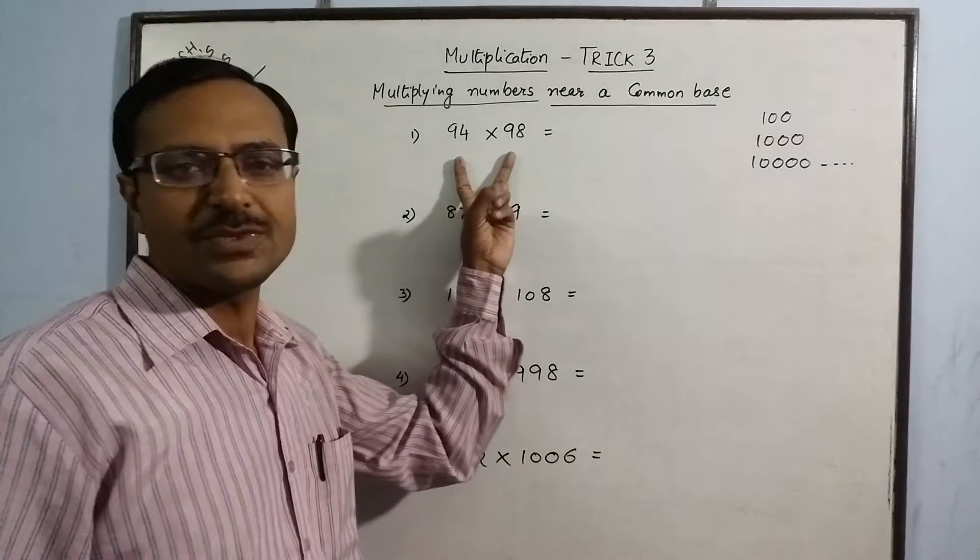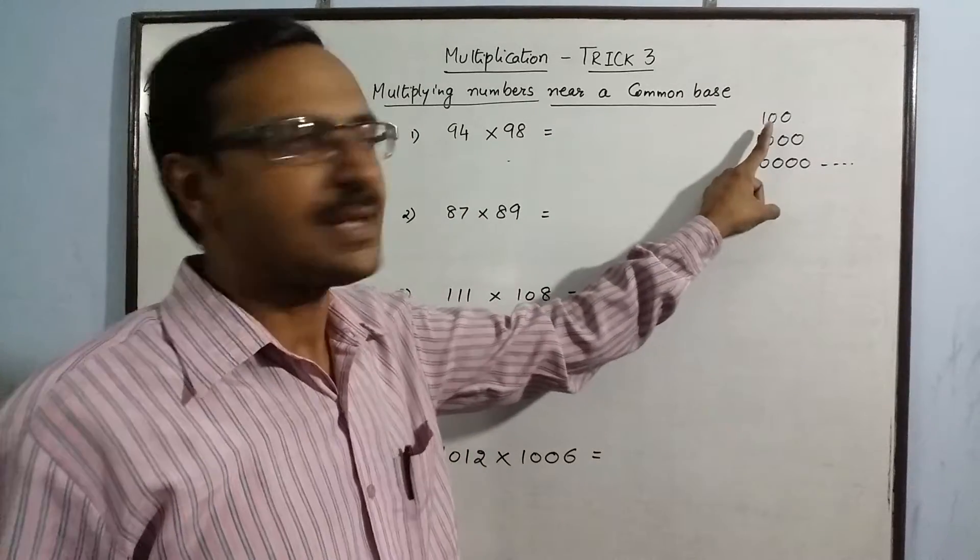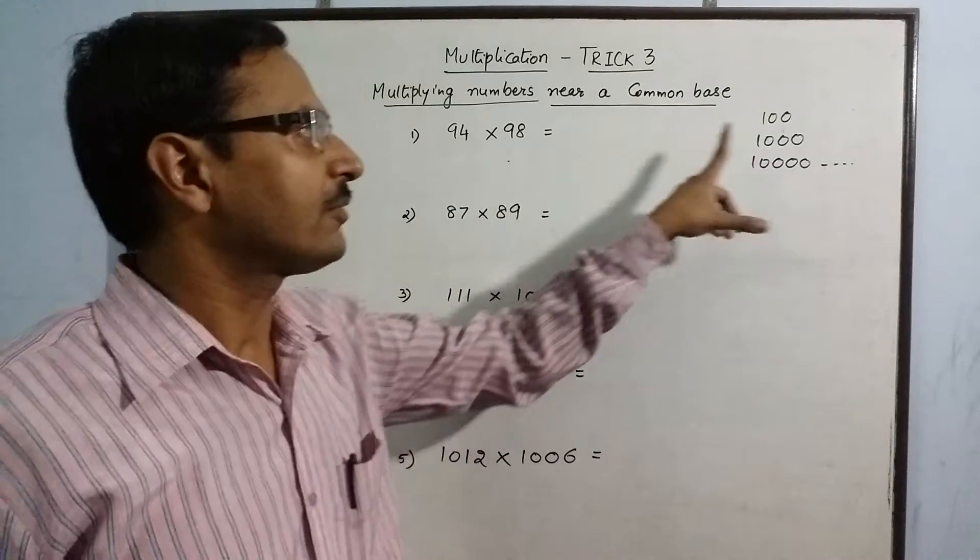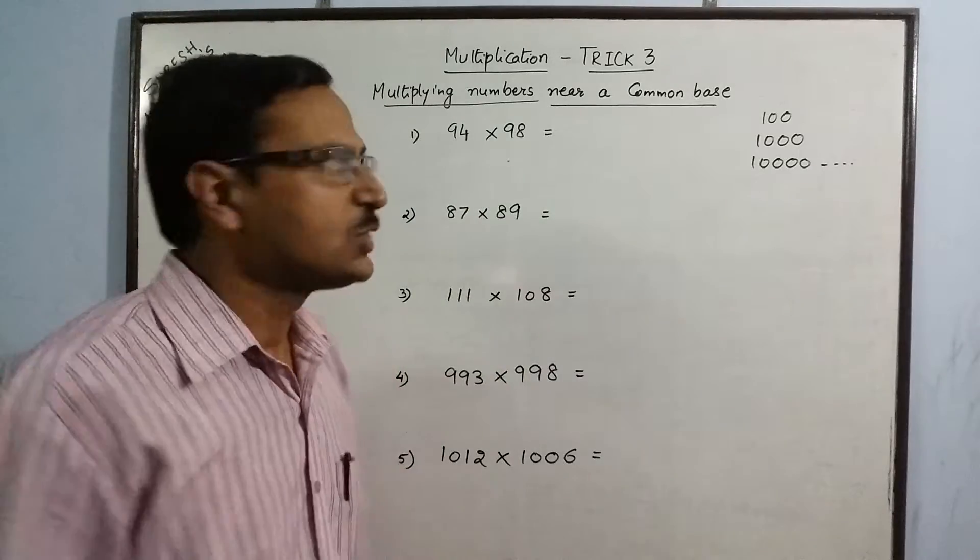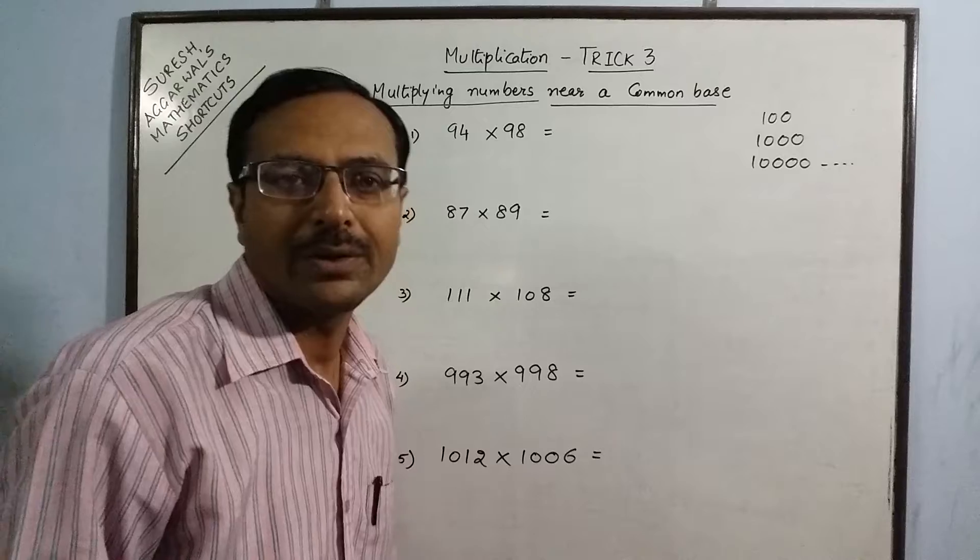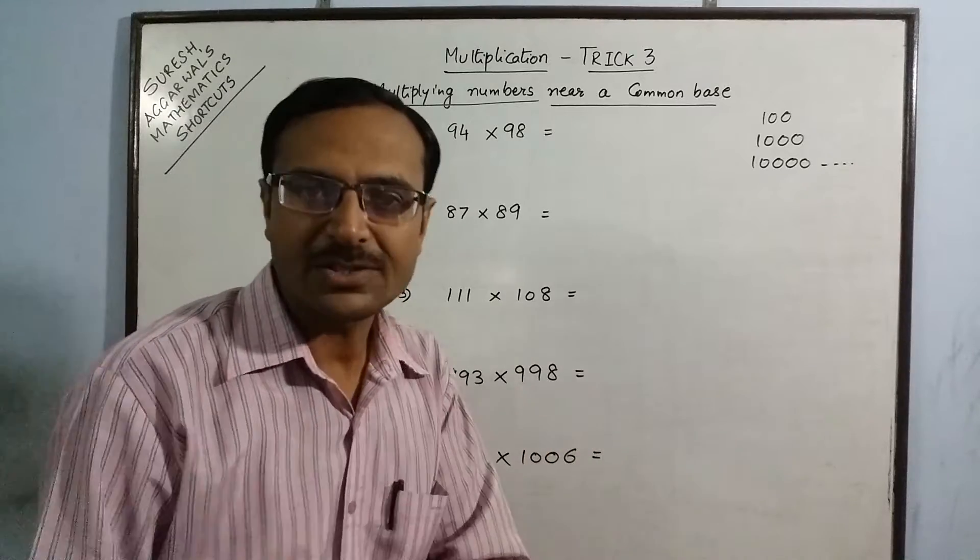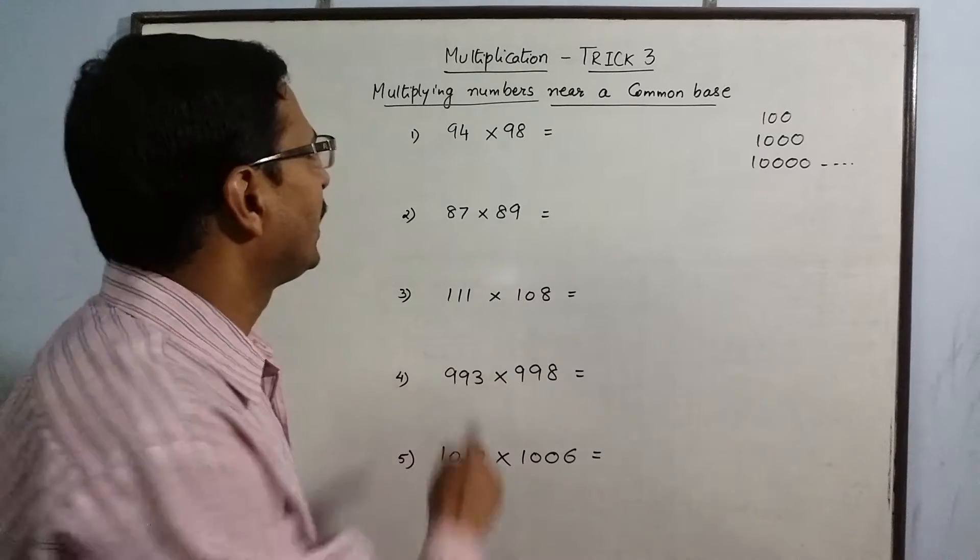If the two numbers which are to be multiplied are near to a common base, as we can see here 94 and 98, they are very near to 100, which is the common base of these two numbers. So, the product of these two numbers can be found out in a matter of 2 or 3 seconds only. I will demonstrate this method now.